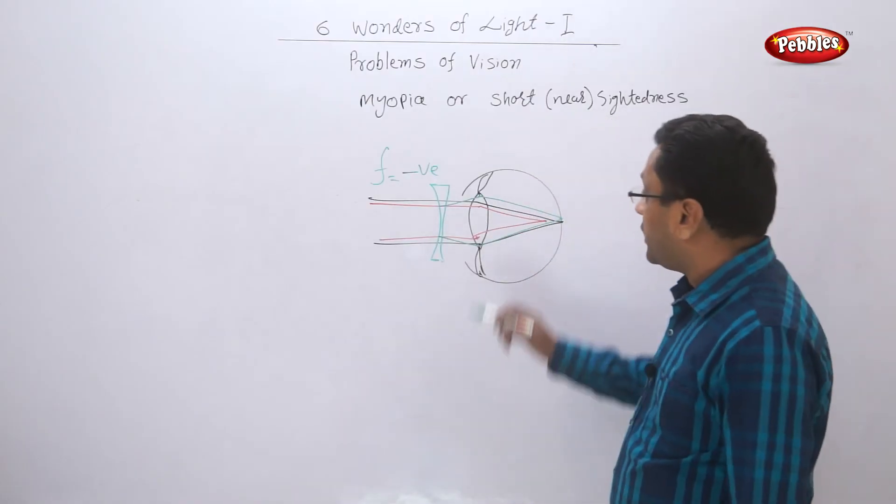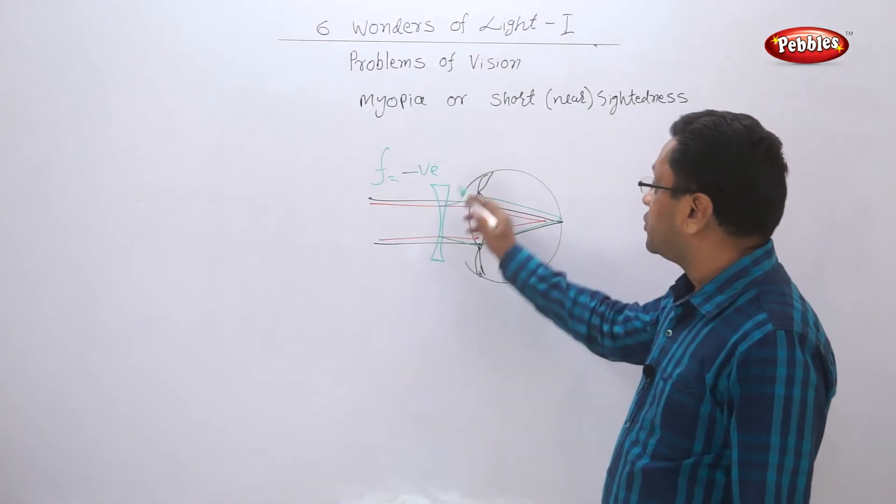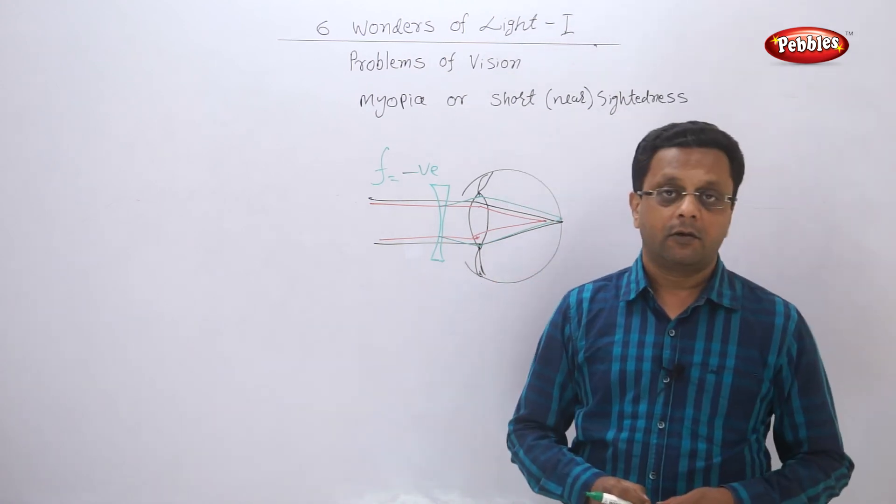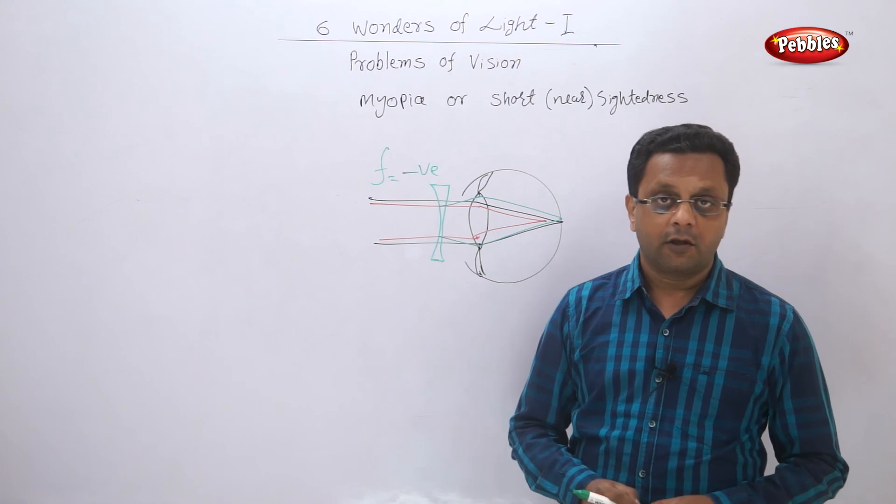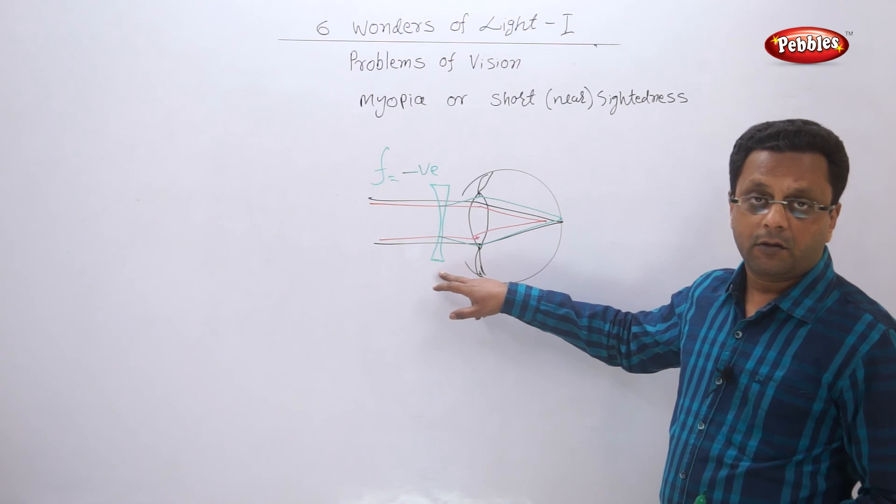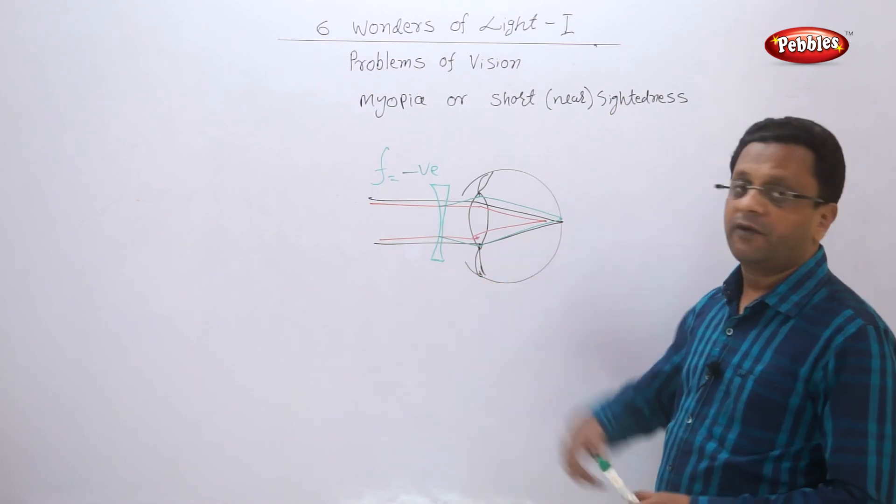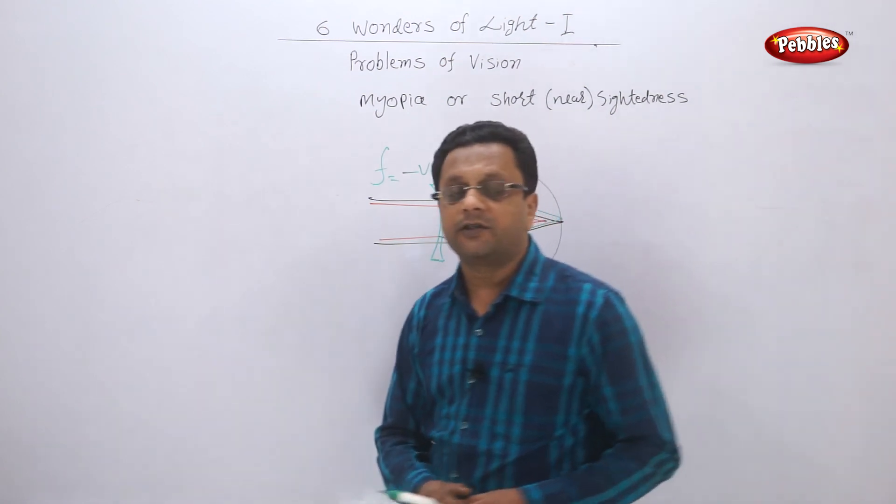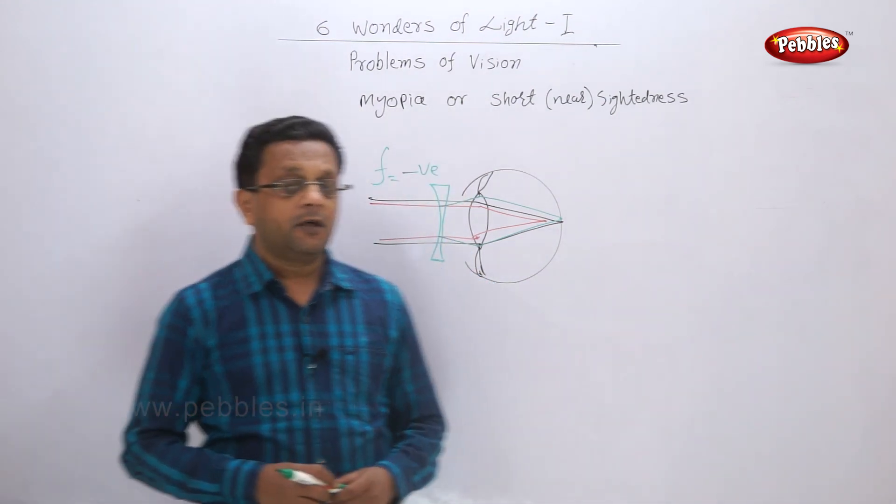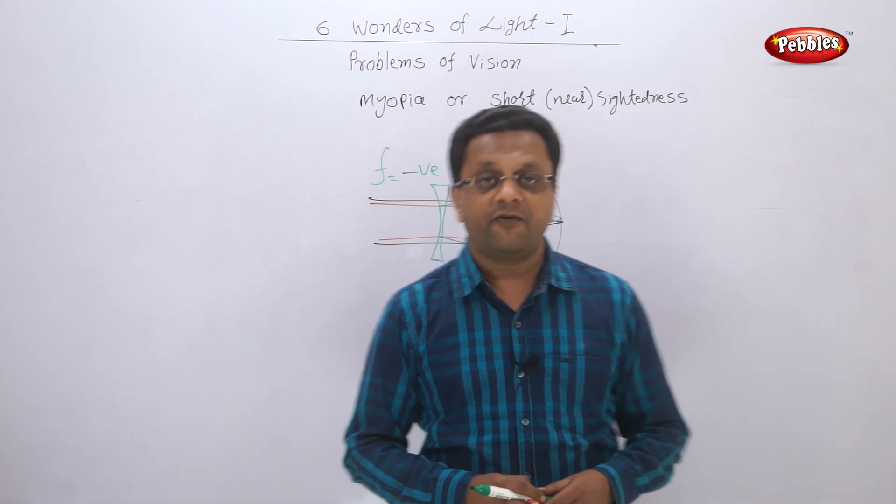Also the degree of diversion we require depends on how much defect you have. What is the actual defect? So the degree of the power of this concave lens depends on the degree of defect. And different power lenses are used of negative numbers. Now let us see what is another defect of the eye.